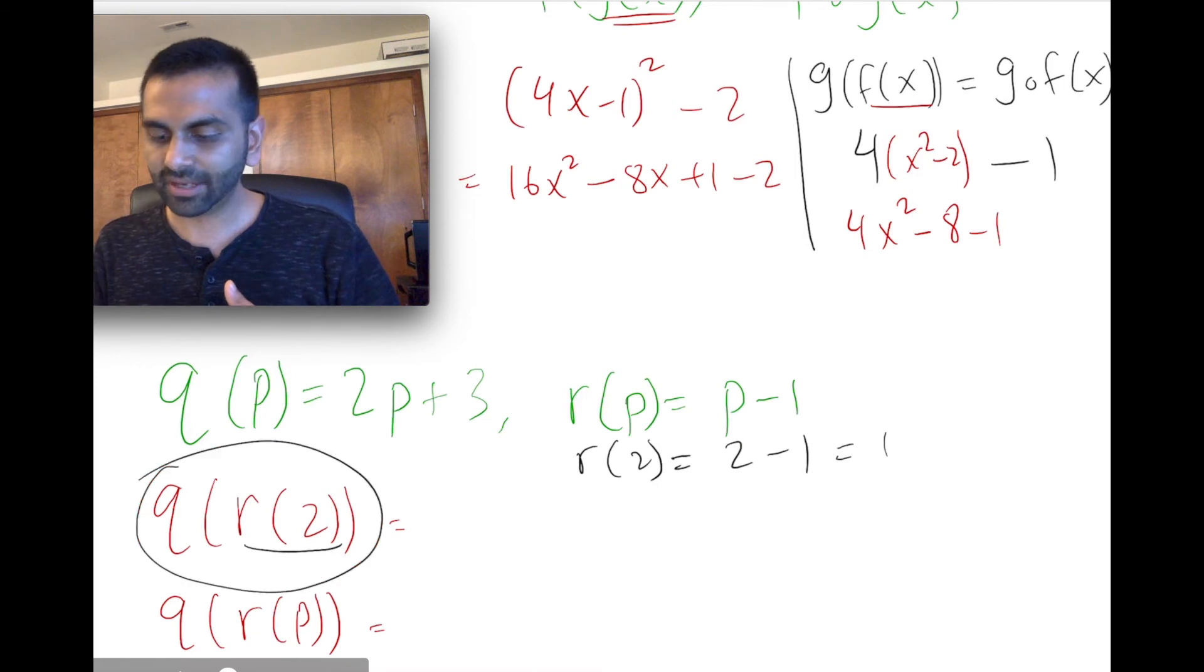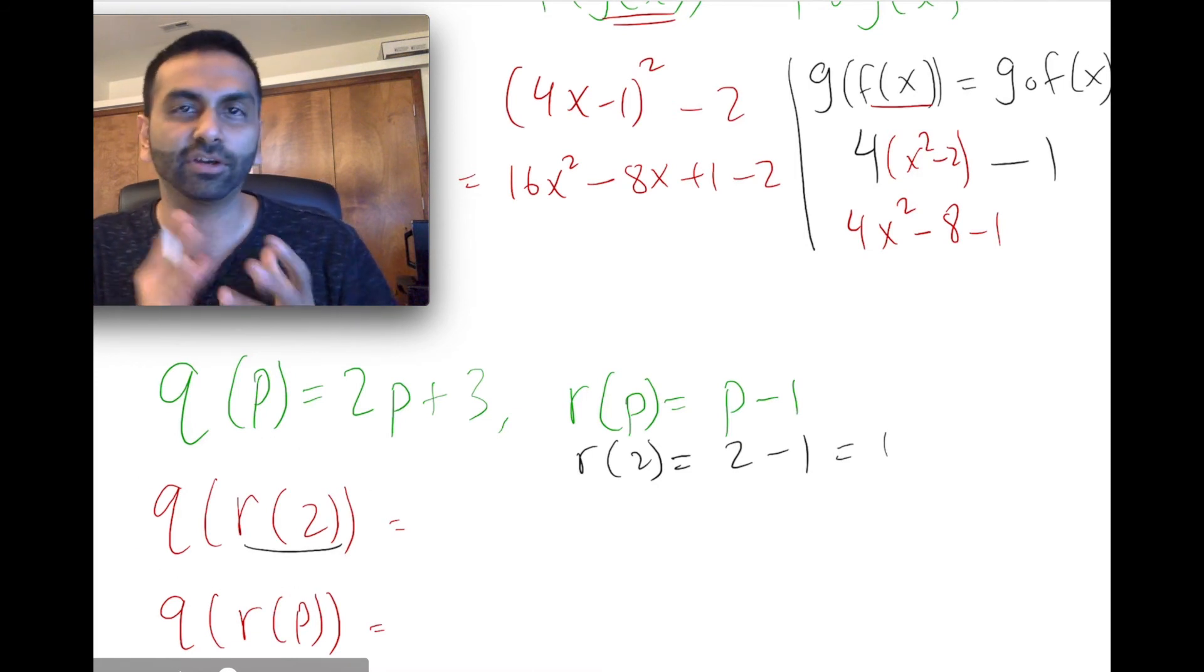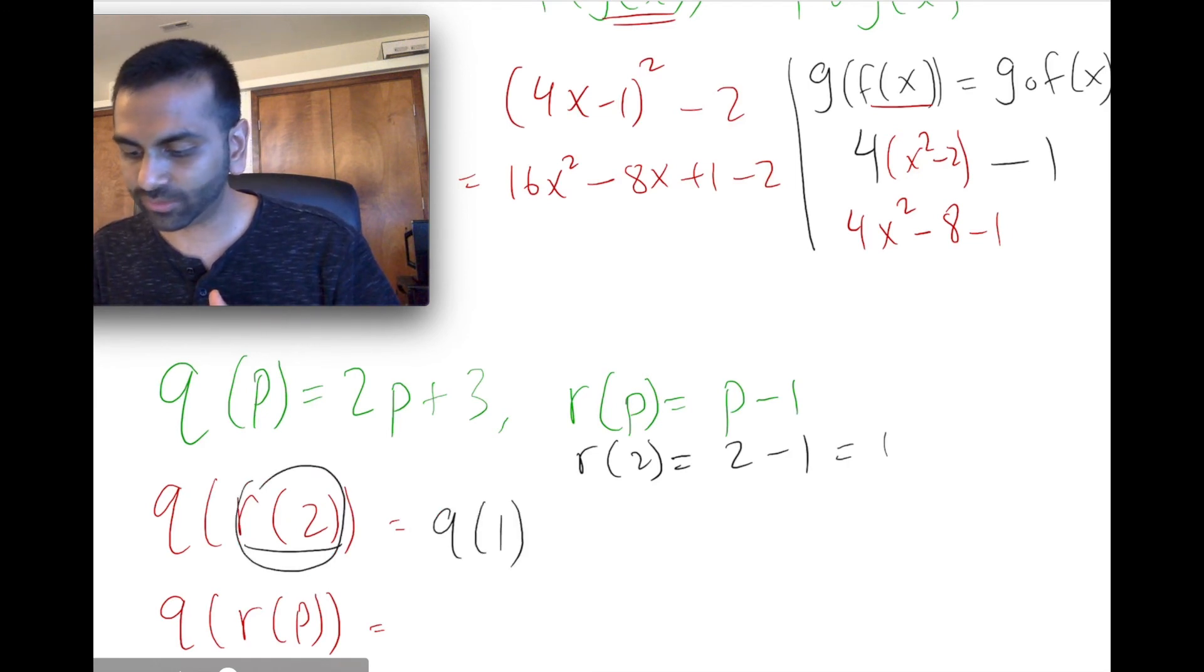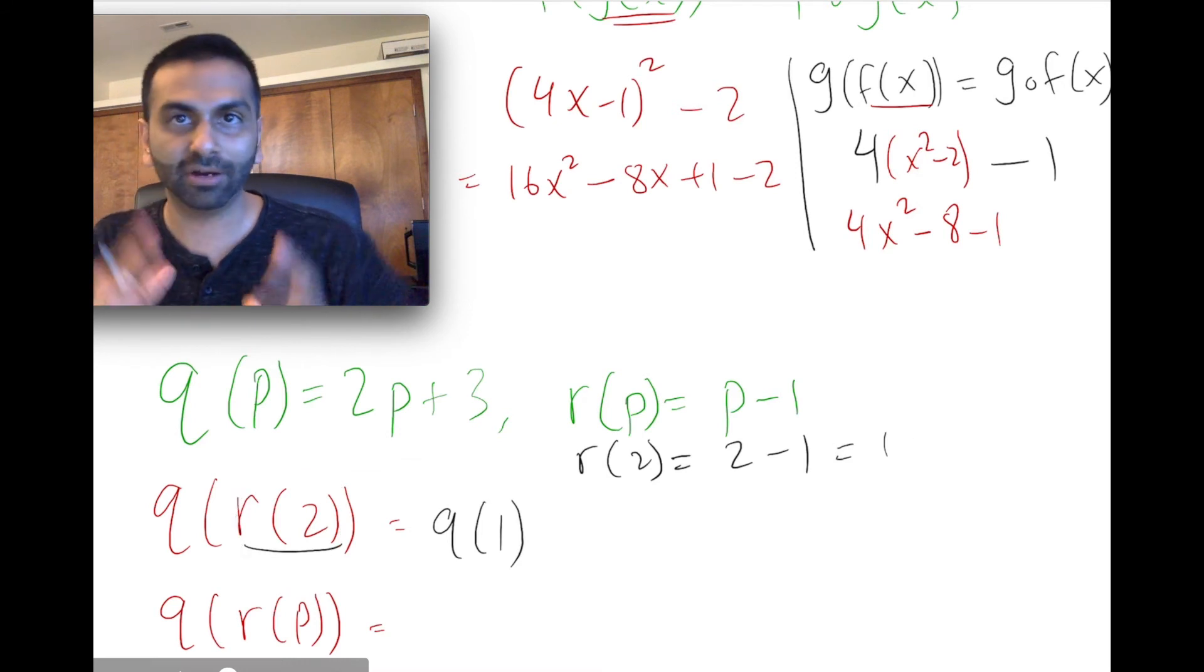So really, whenever they're asking for q of r of 2, that's the same thing as asking what's q of 1, because r of 2 is 1. So if r of 2 is 1, that's q of 1.